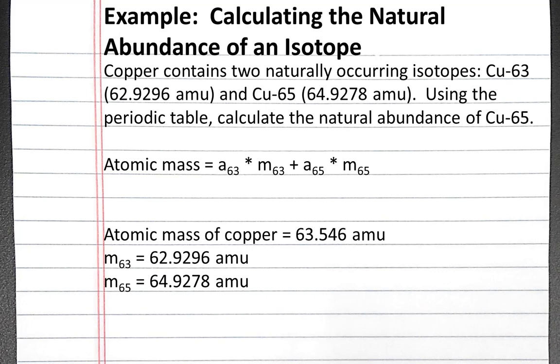We're given the masses of 63 and 65, but we're not given the natural abundances of 63 or 65. However, we do know that because there are only two naturally occurring isotopes, if we add up their natural abundances, we should get one.